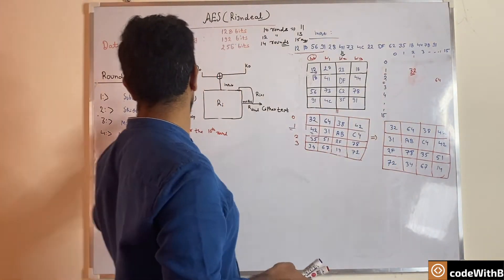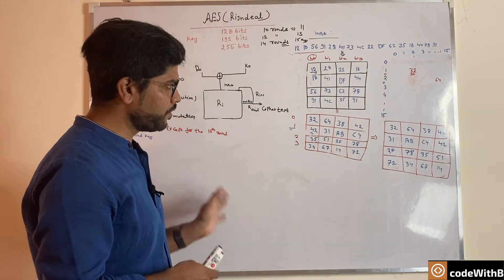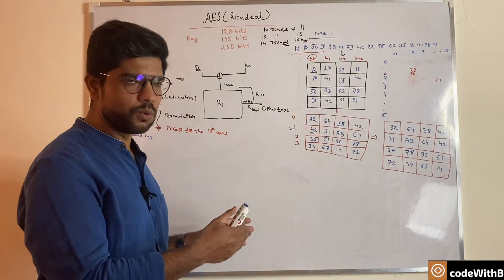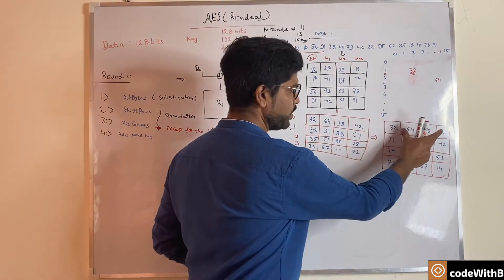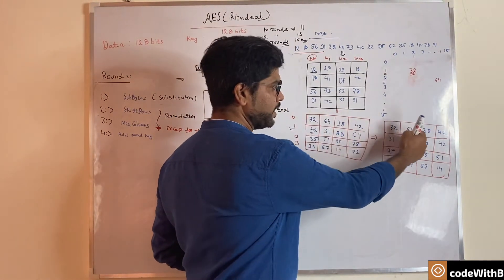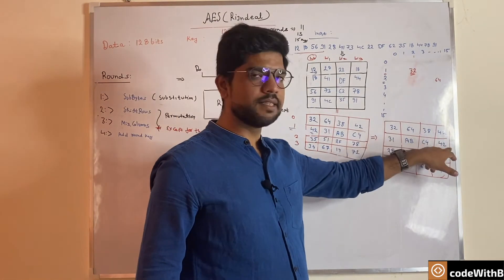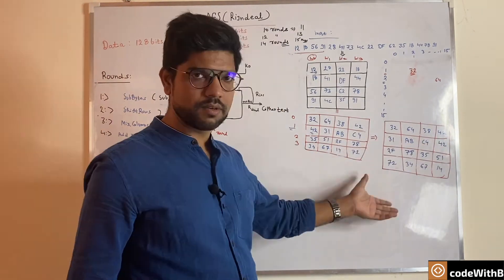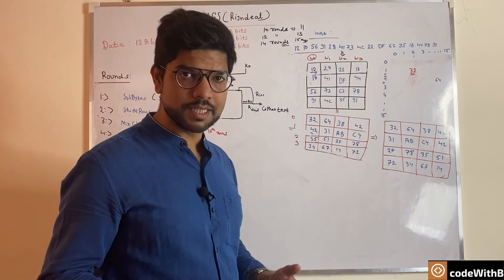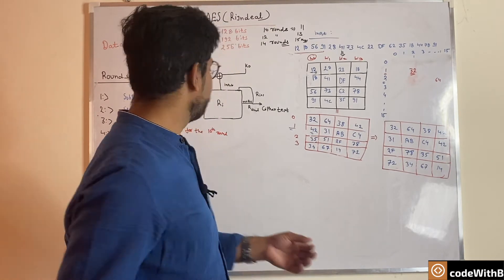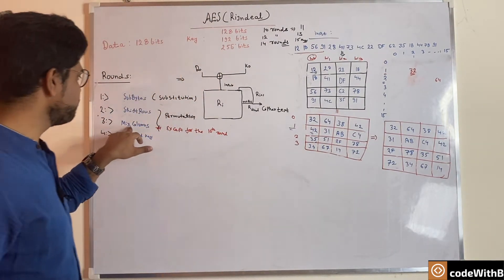This is what shift rows does. In shift rows we have shuffled values within each row, but all values in the first row still remain in the first row, values of the second row remain in the second row, and so on. For further jumbling of the data we have the third step, which is mix columns.